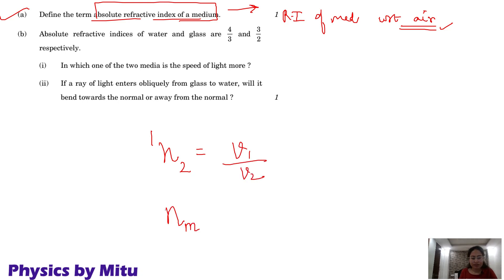If I say absolute refractive index, this means absolute refractive index of medium with respect to air. So this is equal to, this gives me ratio of speed of light in air upon speed of light in that medium.